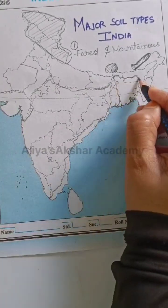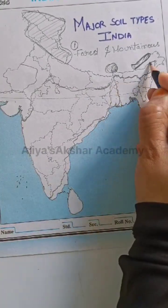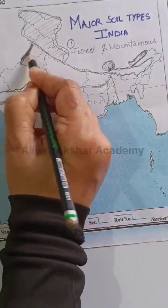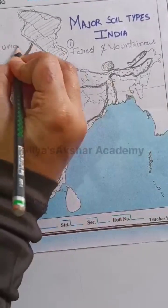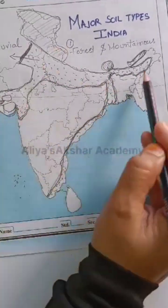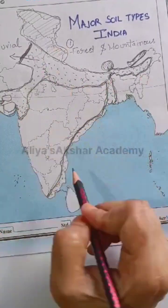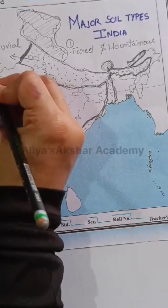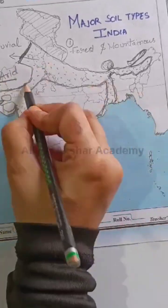Just below it, the northern plains — Assam, Gujarat, Rajasthan, and the eastern coastal plains — have alluvial soil. Western Rajasthan has arid soil.